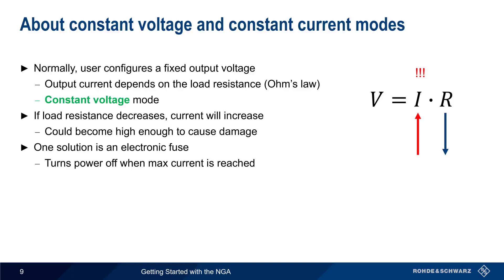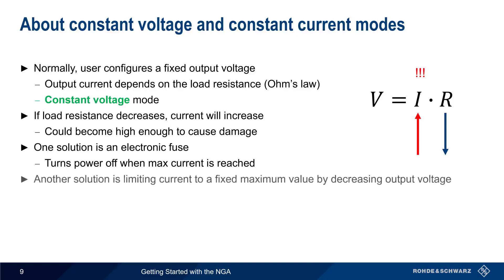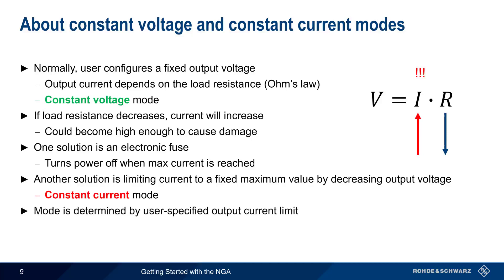One solution to this problem is an electronic fuse that turns power off when maximum current is reached. Instead of disabling the output entirely, another solution is to limit the current to a maximum value by decreasing the output voltage. In this case, the supply is said to be operating in constant current mode. Whether a power supply operates in constant voltage or constant current mode is determined by the user-specified output current limit. There's no button or menu item to toggle between these two modes.